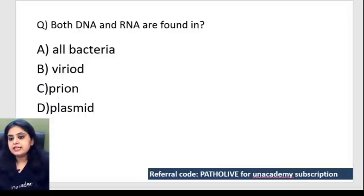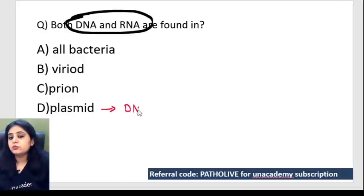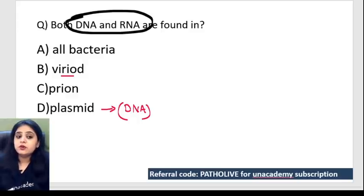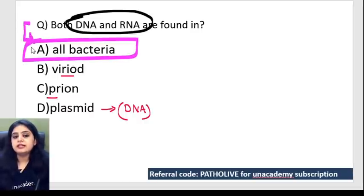Next question: both DNA and RNA are found in which? A viroid, a prion, a plasmid, or bacteria? Plasmid is extra-chromosomal DNA only. Viroid is different — it doesn't have both DNA and RNA. Prion is a misfolded protein — also doesn't have both DNA and RNA. Bacteria are the ones which have both DNA and RNA — that's the right answer.